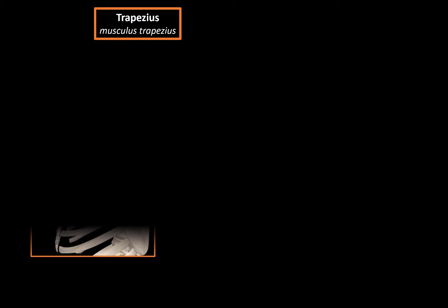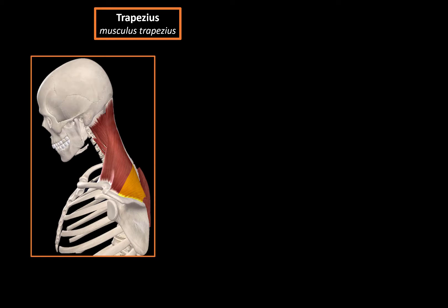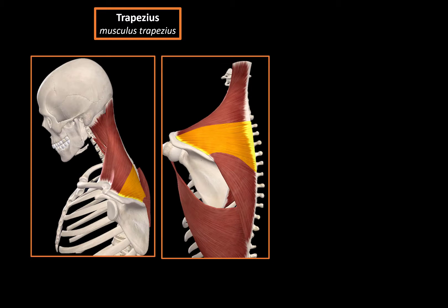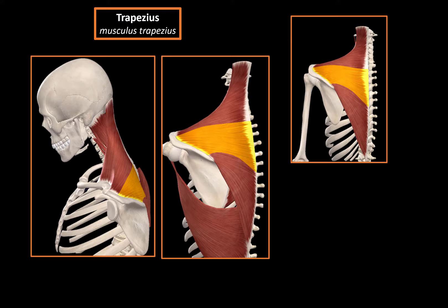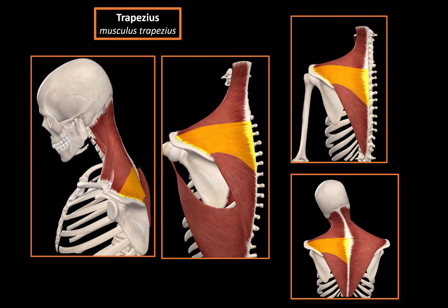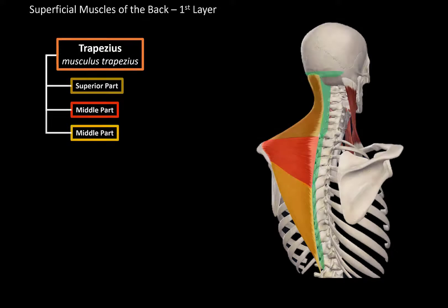So what's the function of the trapezius? The inferior part will pull the shoulders downwards. The middle and the superior fibers will pull the scapula towards the midline, as well as elevating the scapula. They may also extend the head to the side in strong contractions, but primarily they're associated with movement of the scapula.